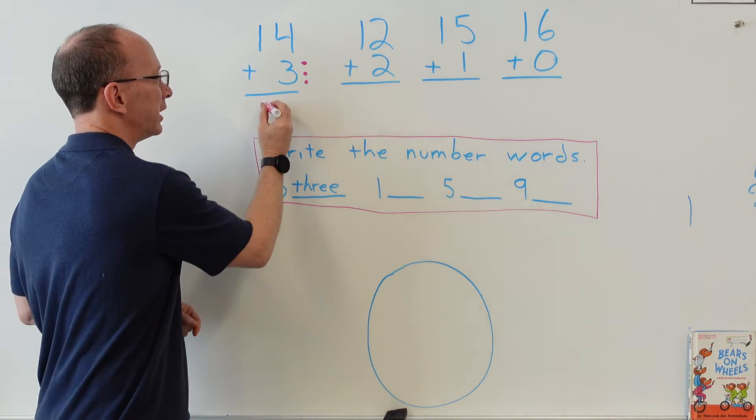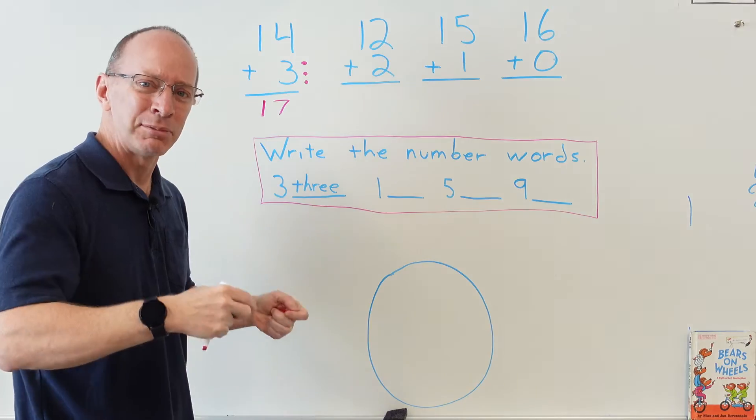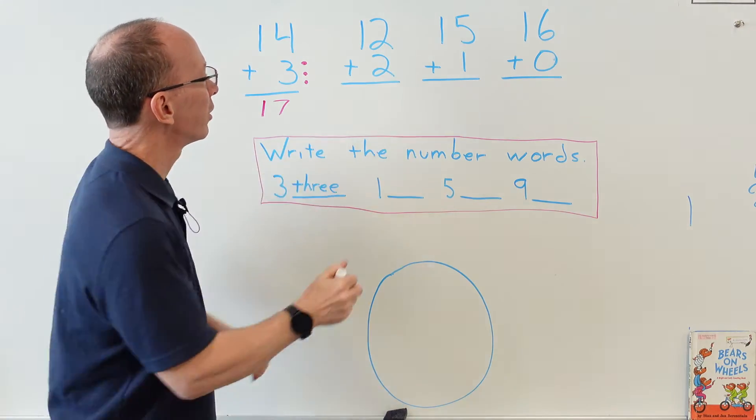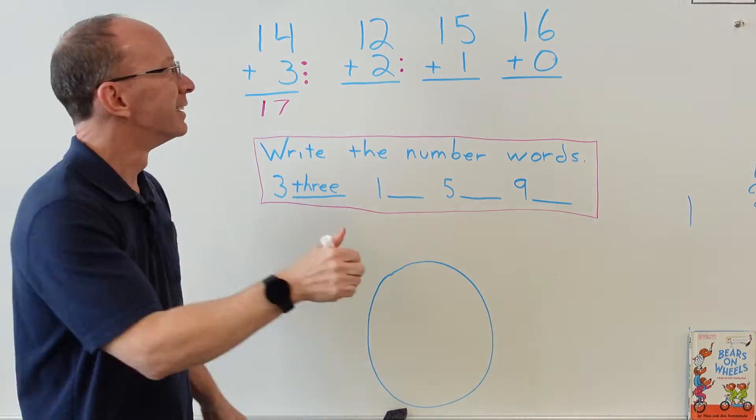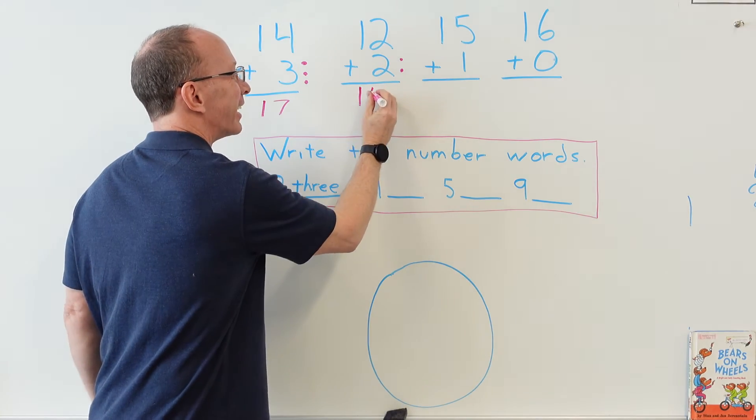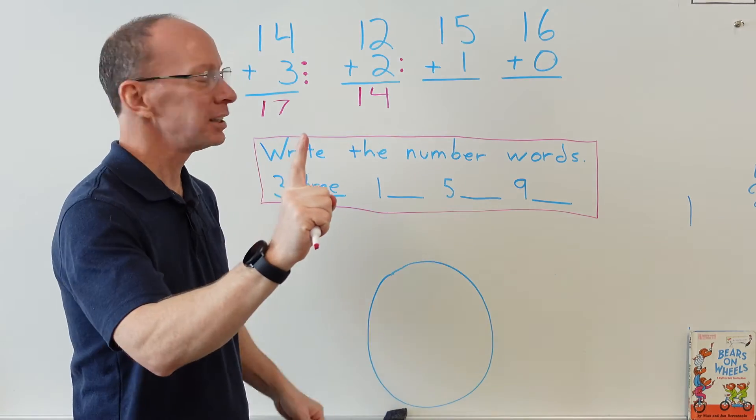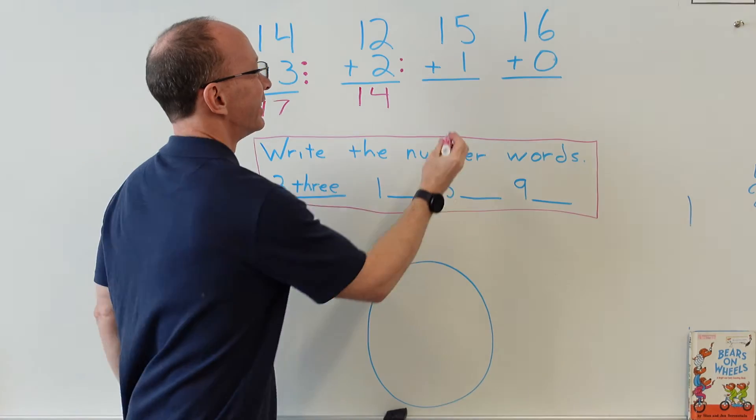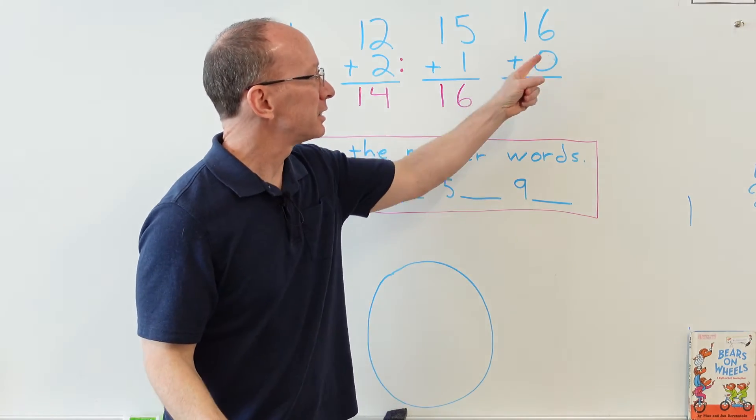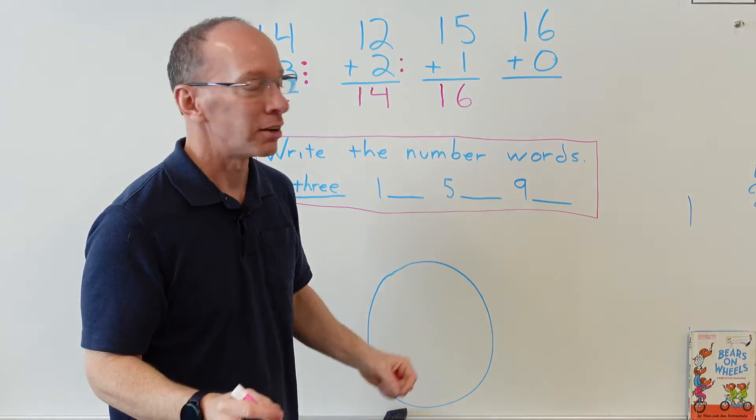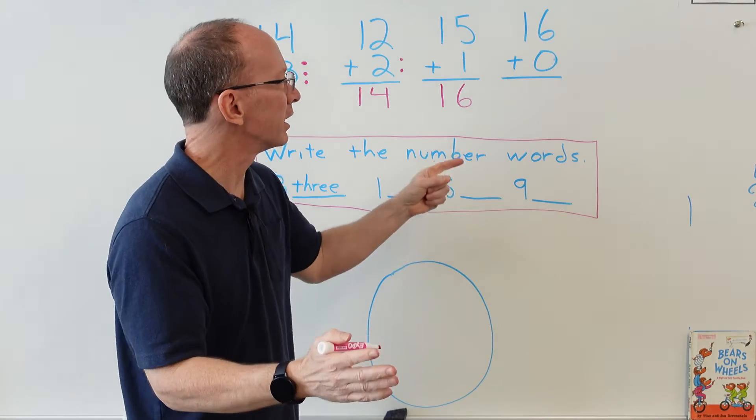I like using funny voices - I'm trying to make math fun for you. We got 12 plus 2: 12, 13, 14. Our answer is 14. 15 plus 1 - you can just use one finger: 15, 16, so we put 16 right there. 16 plus 0. Now this is a tough subject sometimes because it's like, 'Oh, what do we do there?' Remember, it's 16 plus nothing. Zero is nothing, so it's just 16. Awesome.